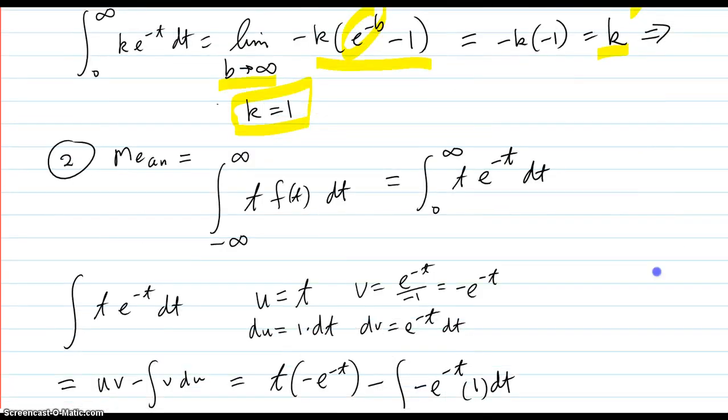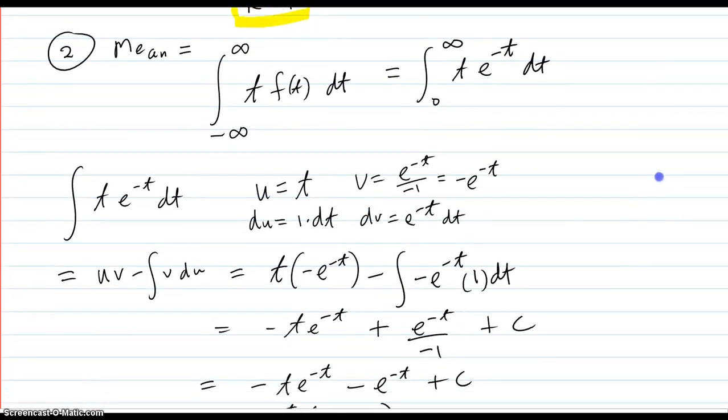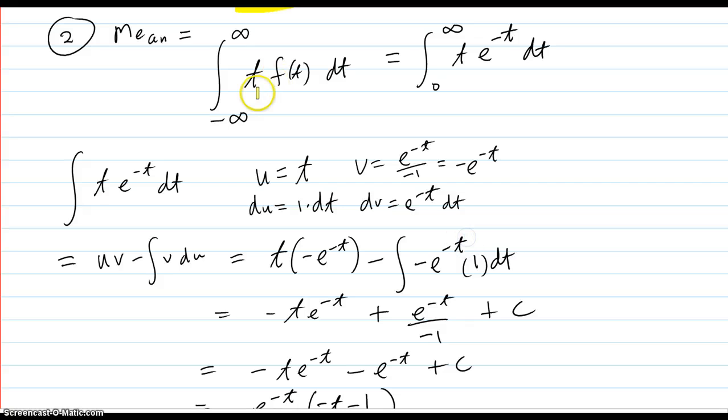Now let's find the mean. Normally you would say, for a density function, you have negative infinity to infinity of t times f(t) dt. But that's going to be zero to infinity since the function is defined just for zero on.